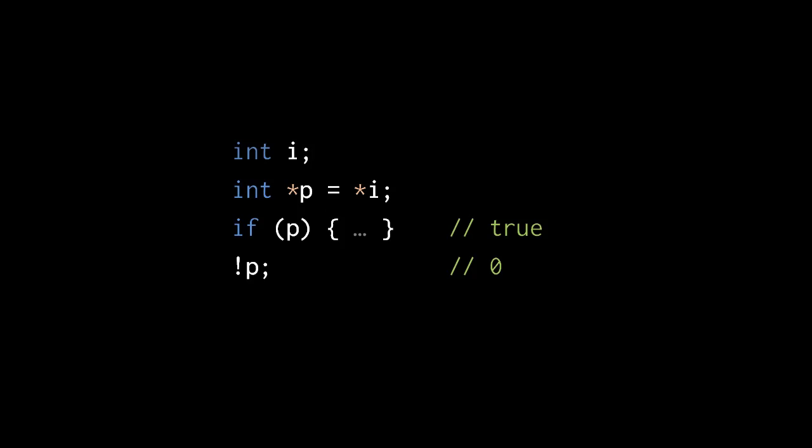Therefore, this if condition will test true, and this not operation will return 0. If instead we assign a null pointer to p, then the same if condition will test false, and this not operation will return 1.